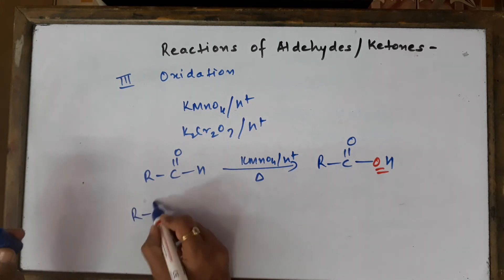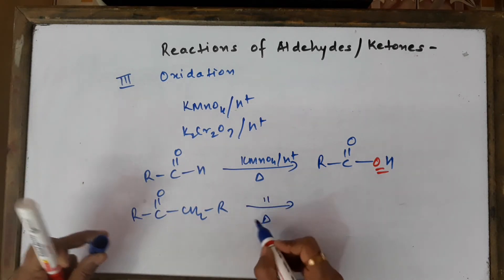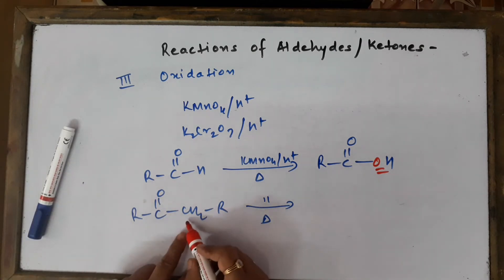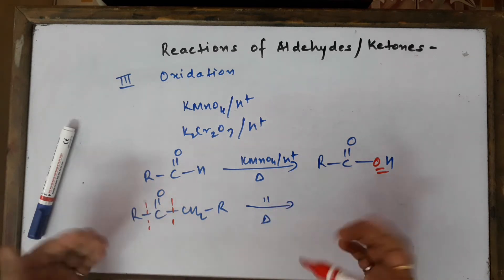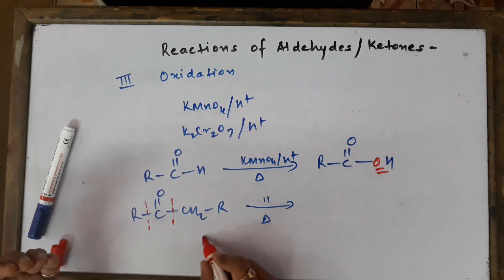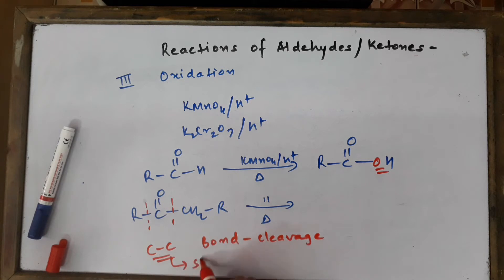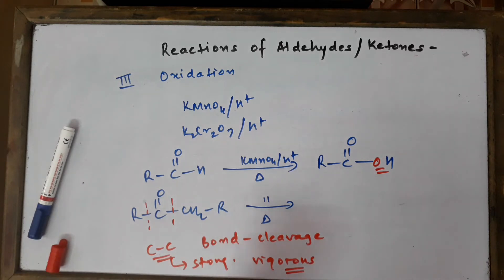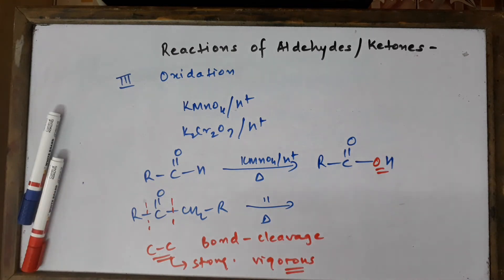For ketones, oxidation is much more challenging. To convert a ketone into an acid, we must break either the bond on one side or the other of the carbonyl carbon — C–C bond cleavage is required. This is a very strong bond, so drastic and vigorous conditions are needed. This is an important point: ketonic oxidation requires C–C bond cleavage, which is why it is more difficult than aldehyde oxidation.